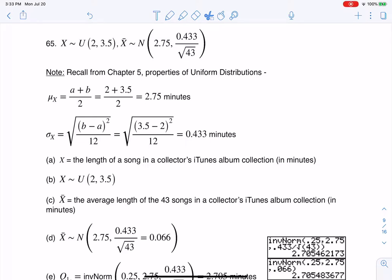Hey Math43, I had a question coming out of chapter 7, number 65, and here we were told that the length of songs in a collector's iTunes album collection is uniformly distributed from 2 to 3 and a half minutes.